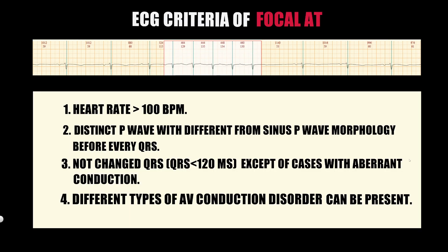The ECG criteria of focal atrial tachycardia include: heart rate more than 100 beats per minute; distinct P-wave with different morphology than sinus before every QRS; unchanged QRS complex — QRS less than 120 ms due to unchanged ventricular conduction, except in cases with aberrant conduction. Different types of AV conduction disorder can also be present.